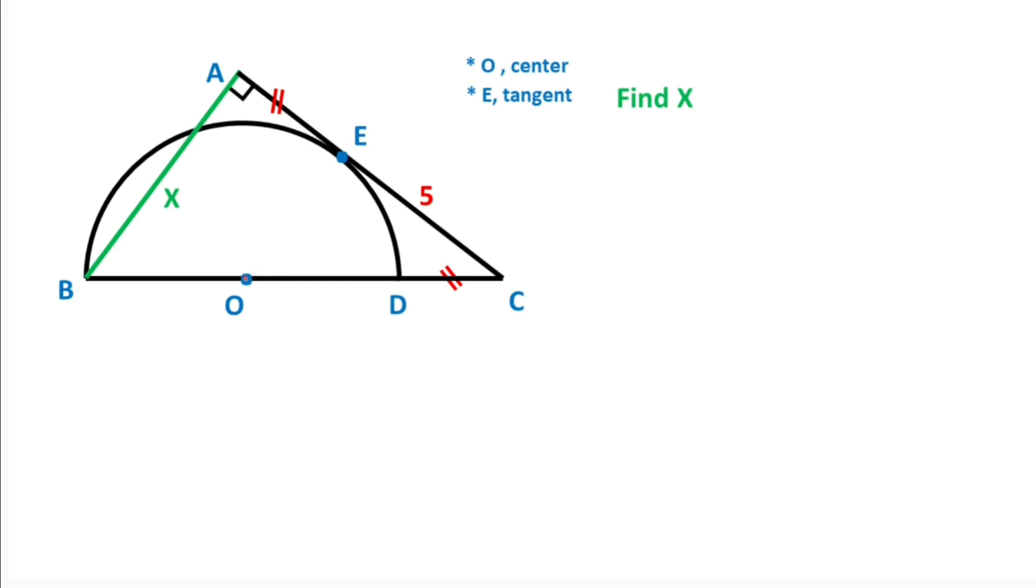O is the center of the semicircle and these two parts are equal. Here is the tangent point and the length of EC is given as five units, and x is what we need to find.